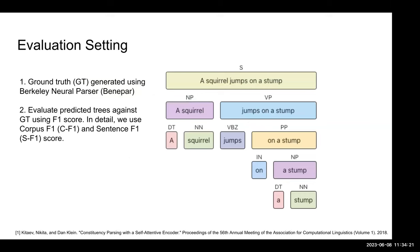For evaluation, we use the ground truth generated by the Berkeley Neural Parser (BANAPAR), whose accuracy has achieved more than 95% in comparison with human annotations, and we evaluate the predicted parse trees against the ground truth using F1 score. We utilize two kinds of scores: corpus F1, which pays more attention to general performance, and sentence F1, which pays more attention to per-sentence similarity.